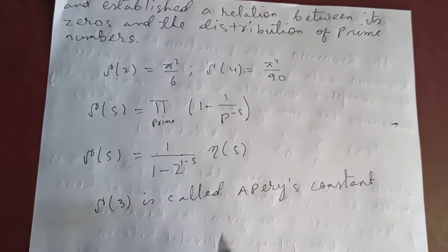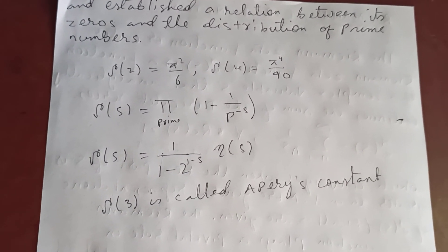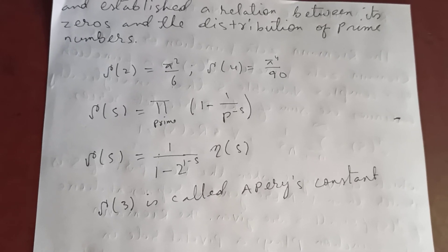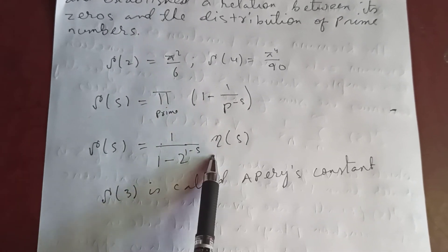Zeta of s is the product over prime numbers, 1 minus 1 over p to the minus s, where p is a prime number. And the relation between Riemann zeta function and eta function: zeta of s is 1 over 1 minus 2 to the 1 minus s times eta of s.